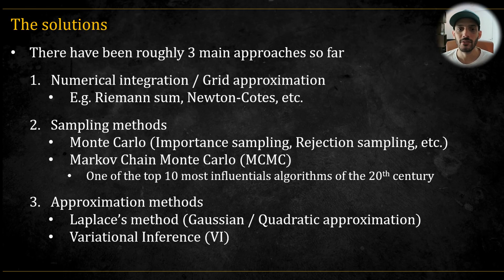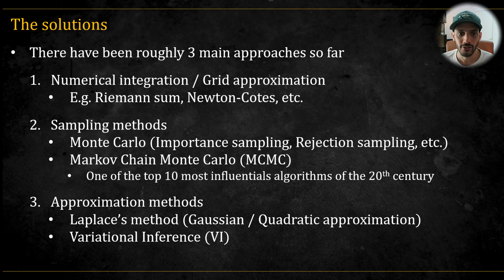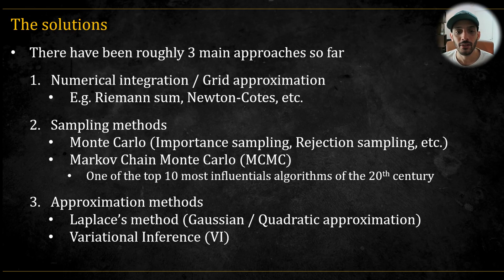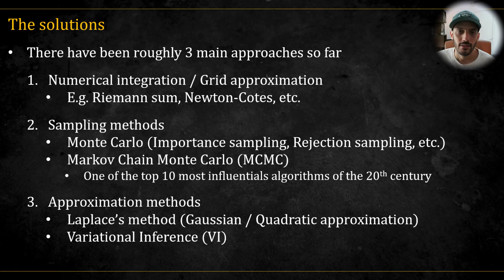The third approach is approximation methods. At the simpler end, you have something like Laplace's method, which is also known as Gaussian or quadratic approximation. And at the more advanced end, there's the entire field of variational inference. Of course, there are other approaches too, but these are the main ones I've encountered in statistics. With the exception of MCMC, I've already made videos about all of these methods. You can check them on my channel, and I'll leave links in the description.